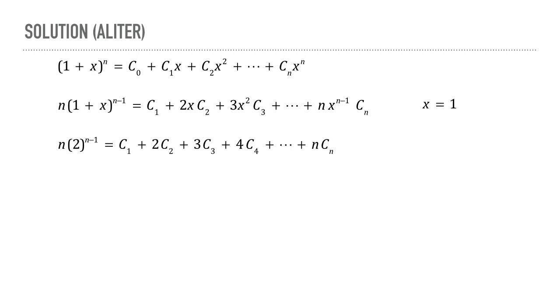Now over here, we can put n equals 20 to find that the required sum is equal to 20 times 2 to the power 19, which can be written like this. Therefore, the correct answer is option B.